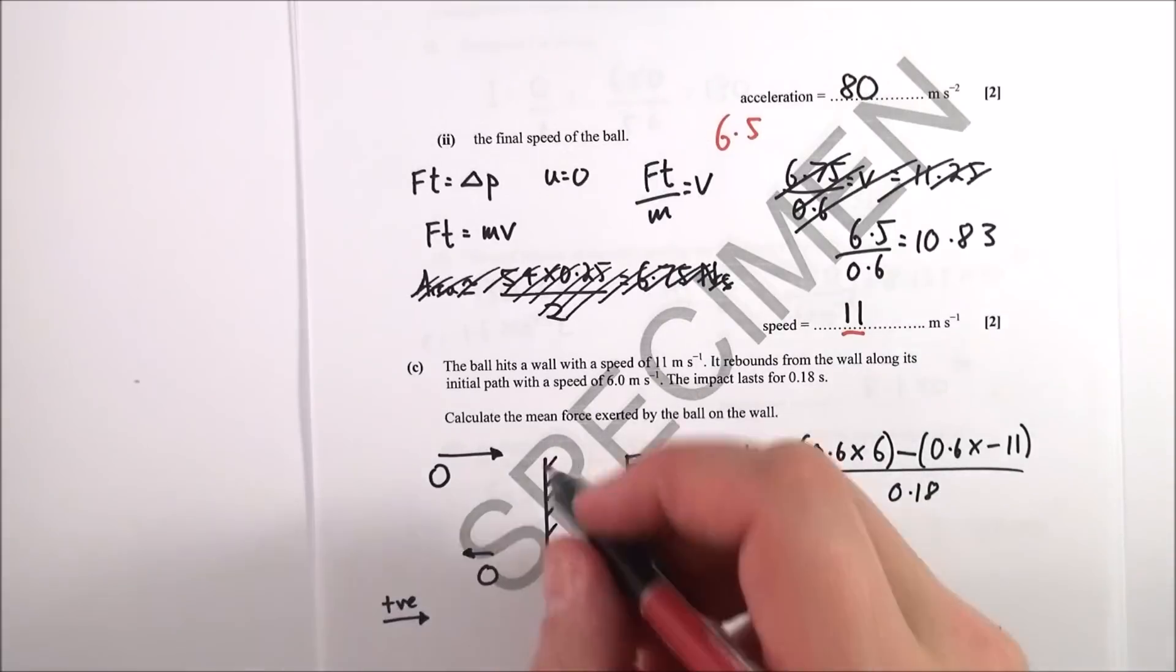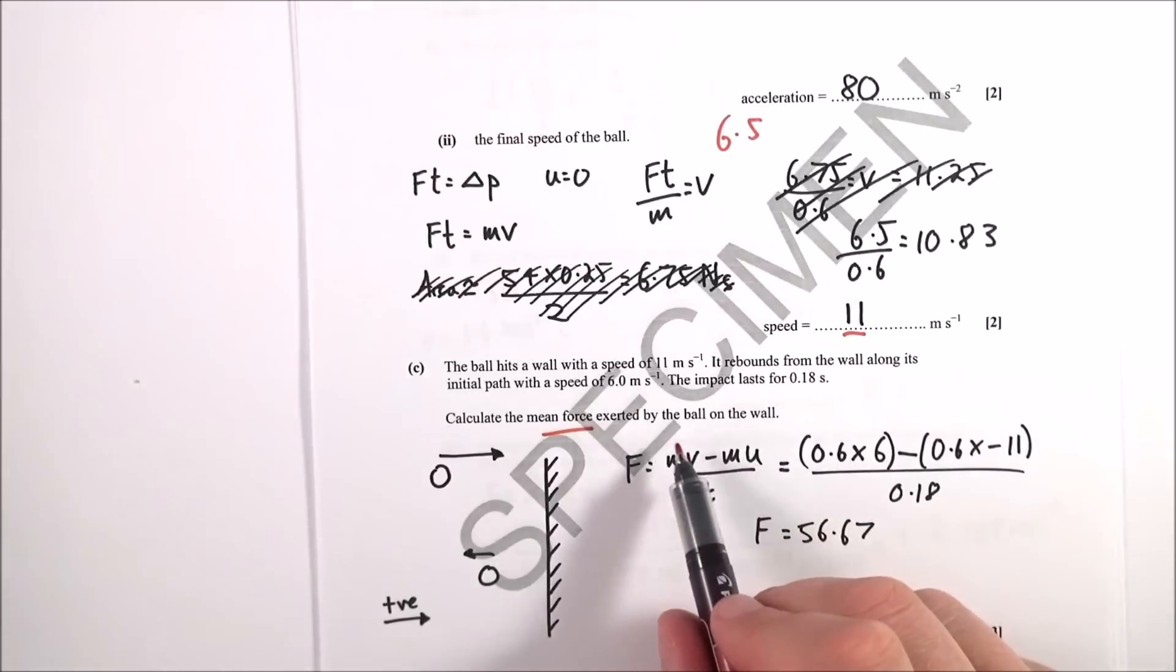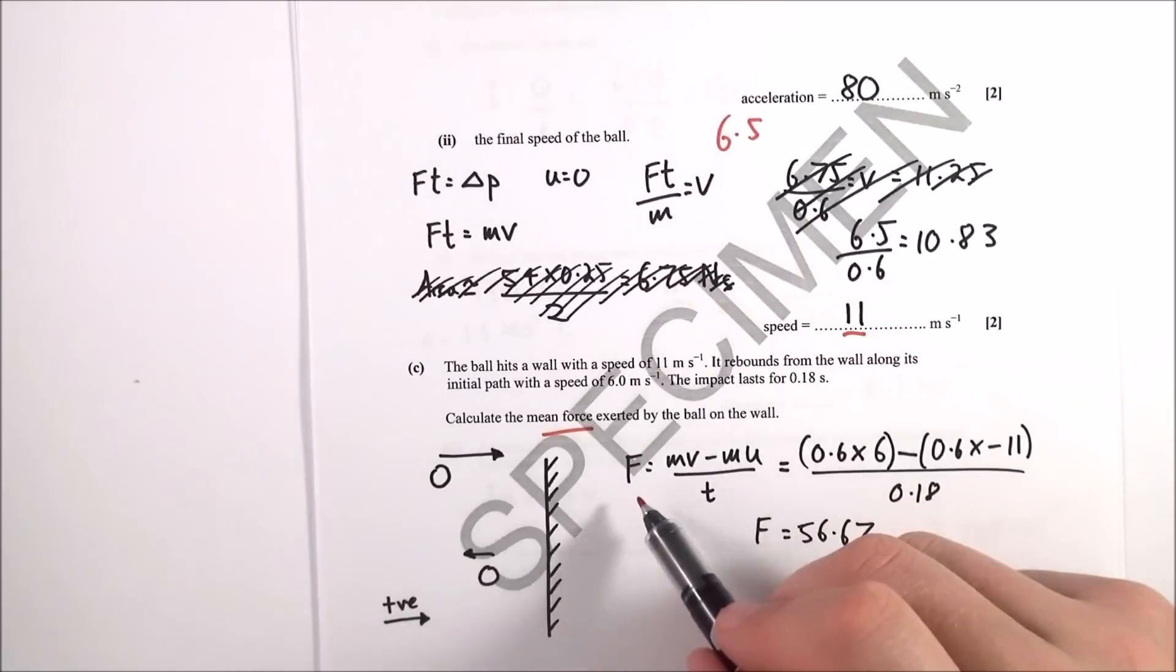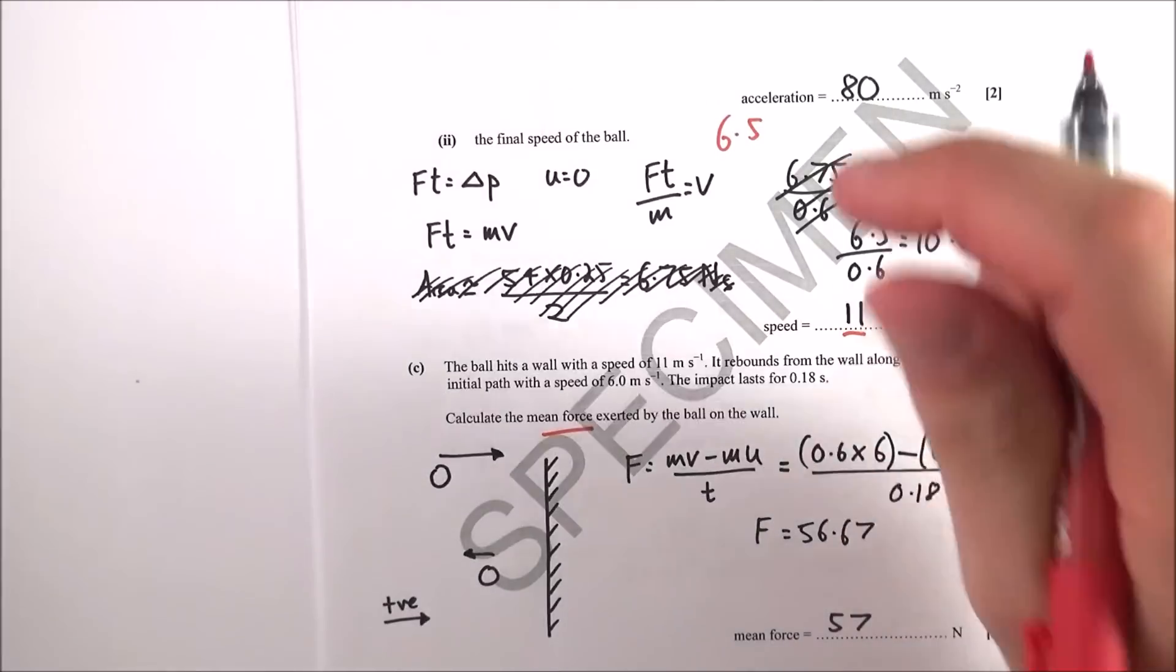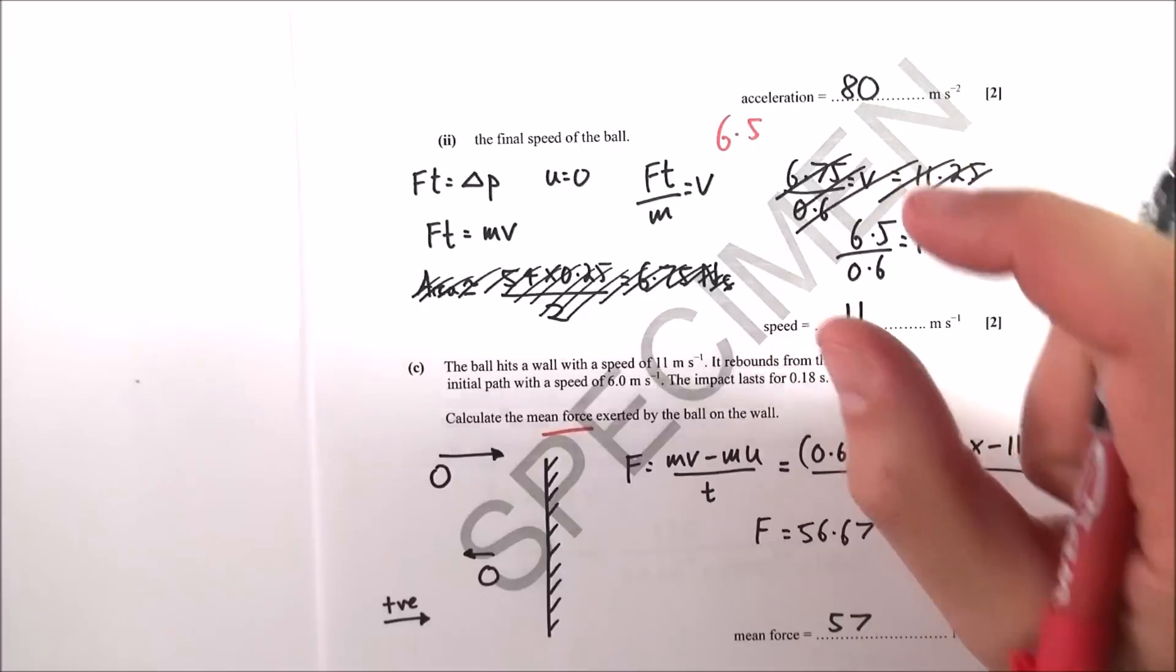Newton's second law: force equals rate of change in momentum, so mv minus mu over t. This is where people make a mistake - they think it starts at 11, ends at 6, so the change in velocity is 5. It's not that, because velocity is a vector, so direction is important.